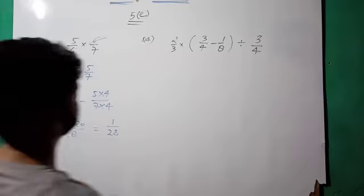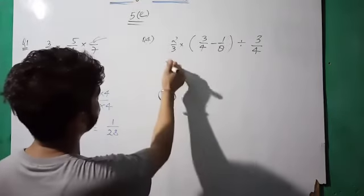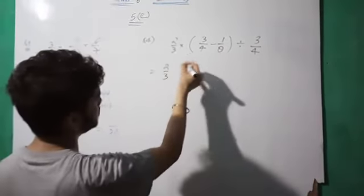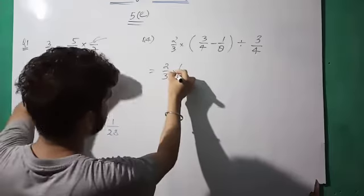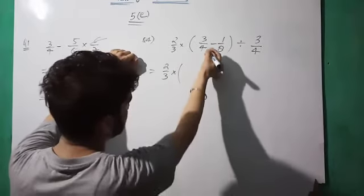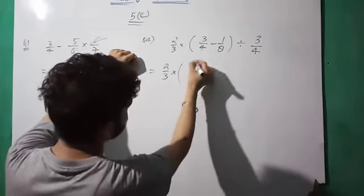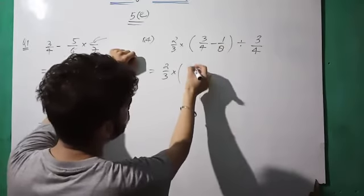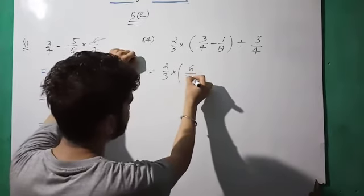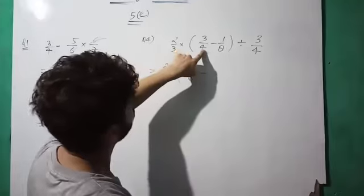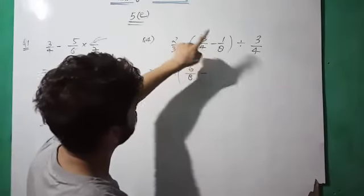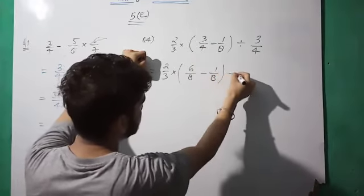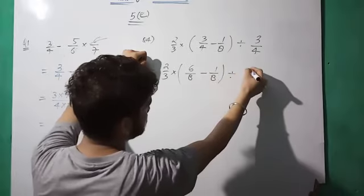Now we have question four: two by three into the bracket. First you have to solve the bracket. For solving the bracket you have three by four, take the LCM. Multiply the numerator and denominator by two: six by eight. So six by eight minus one by eight, divide by three by four.